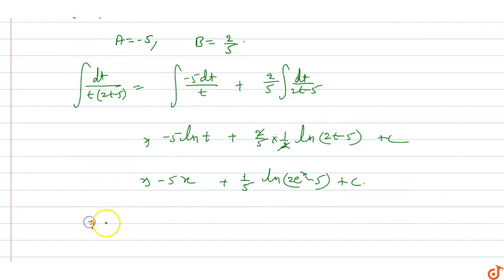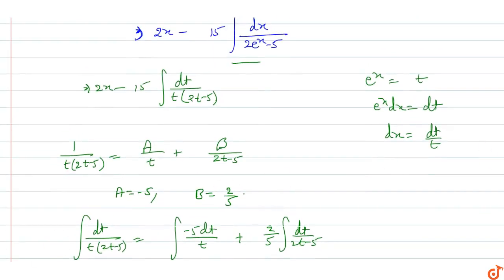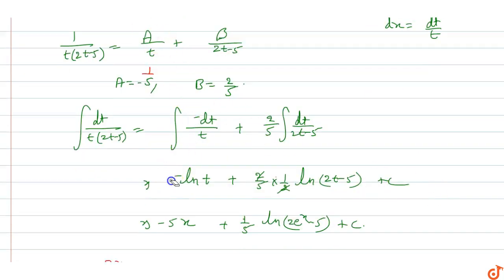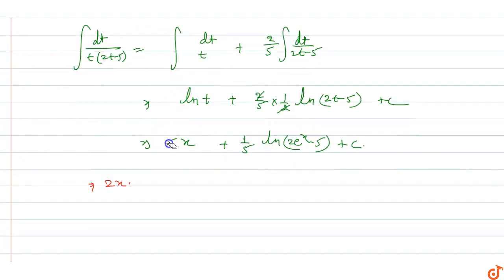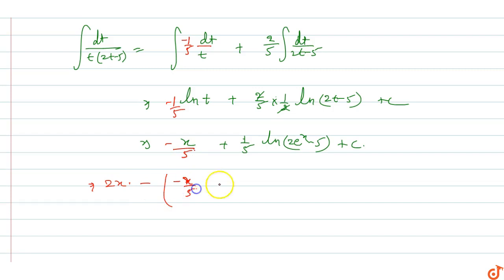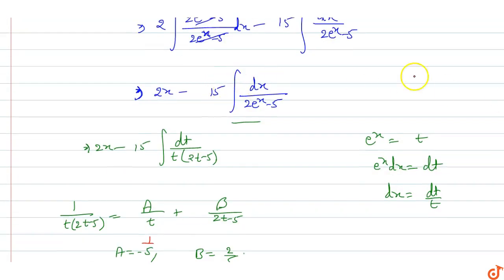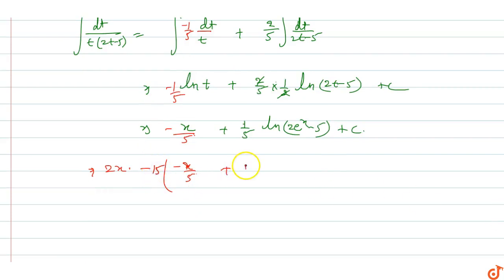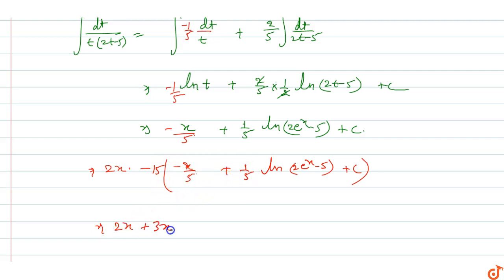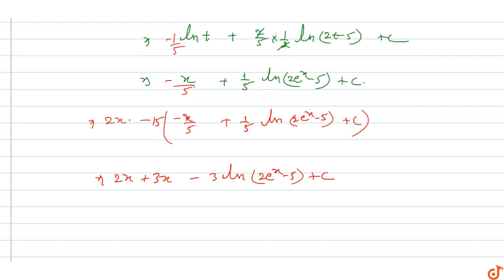The total integral becomes 2x minus 15 times (x/5) plus 15 times (1/5) ln(2eˣ - 5) plus c. This simplifies to 2x - 3x plus (1/5)(15) ln(2eˣ - 5), giving us 5x minus 3 ln(2eˣ - 5) plus c. Wait, collecting terms: 2x - 3x = -x, so the result is 2x plus 3 ln(2eˣ - 5) plus c.